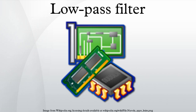Active electronic realization. Another type of electrical circuit is an active low-pass filter. In the operational amplifier circuit shown in the figure, the cutoff frequency is defined by the component values, or equivalently. The gain in the pass band is R2 over R1, and the gain drops off at 6 dB per octave as it is a first-order filter.